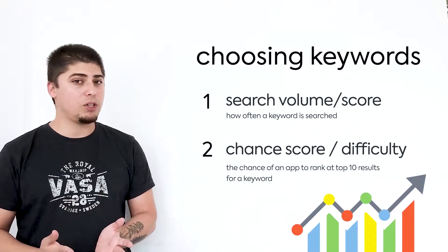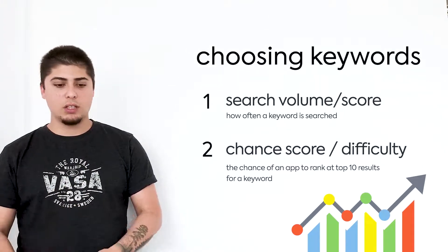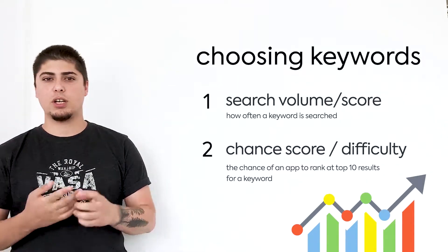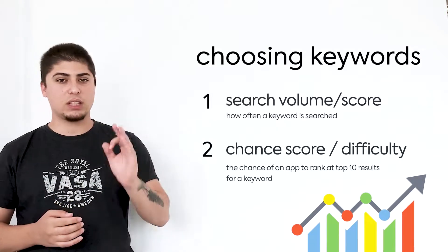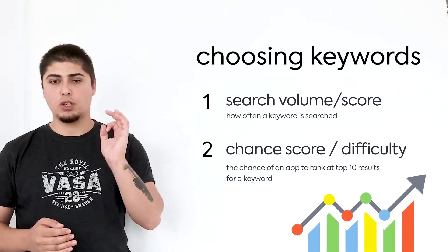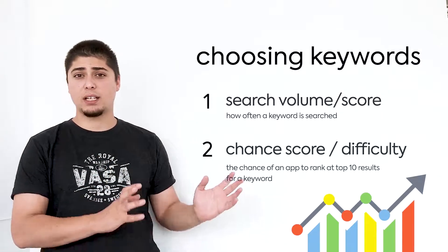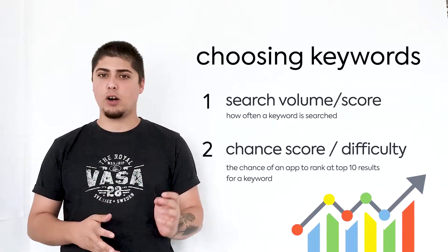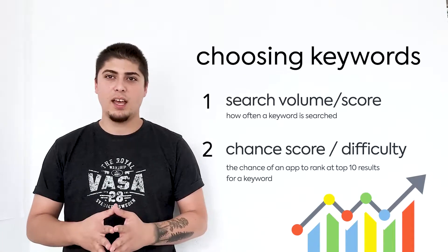So how do you decide which keywords to go for? First and foremost, you have to make sure that those keywords are relevant to your app. You don't want your GPS tracker app to rank for tower defense keywords, obviously.